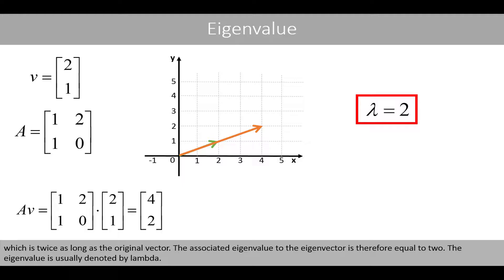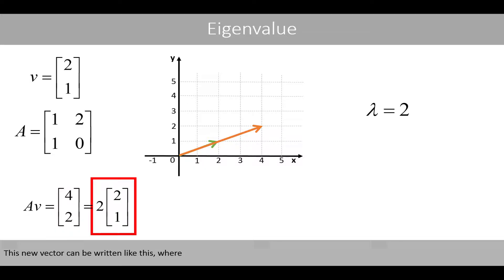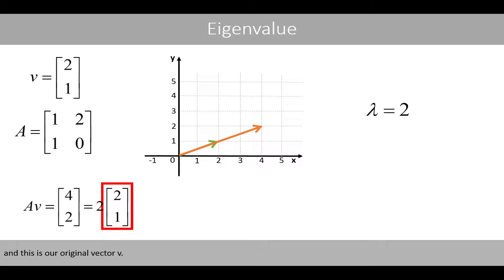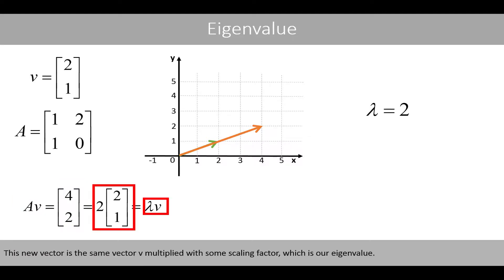The eigenvalue is usually denoted by lambda. Remember that if we multiply matrix A by vector V, we will get a new vector. This new vector can be written as 2 times the original vector V, where 2 is the eigenvalue. Thus, if we multiply matrix A by the eigenvector, we will get a new vector that is the same vector V multiplied by some scaling factor, which is our eigenvalue.